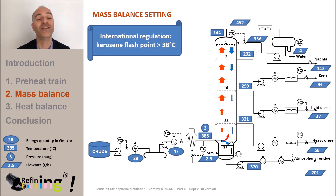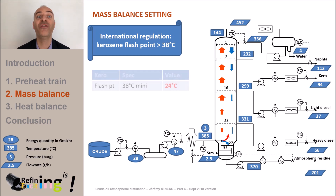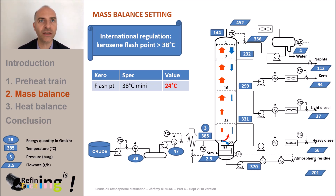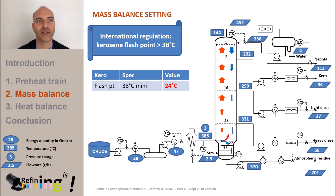The international specification for the kerosene flashpoint is 38°C. In our case, the flashpoint of the kerosene is 24°C. This kerosene is therefore too light. We could increase the naphtha flow, but it would have to be increased by a lot to be able to target the 38°C required by international regulations.